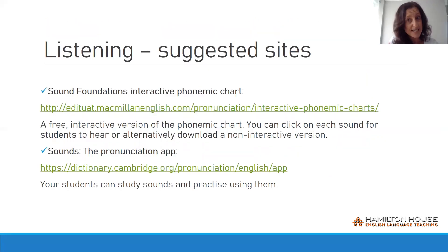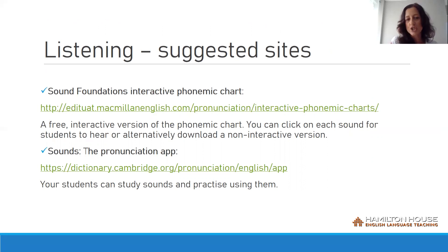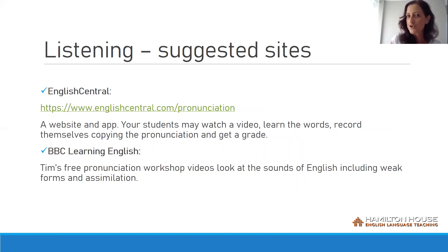Here are some suggested sites to help learners improve their listening skills. Sound Foundations Interactive Phonemic Chart: a free interactive version of the phonemic chart — you can click on each sound for students to hear, or alternatively download a non-interactive version. Sounds, the pronunciation app: your students can study sounds and practice using them. Forvo: a free pronunciation dictionary where students can listen to how words, including names of places, are pronounced by people around the world. Ship or Sheep: free practice of minimal pairs. English Central: a website and app where students watch a video, learn the words, record themselves copying the pronunciation and get a grade.